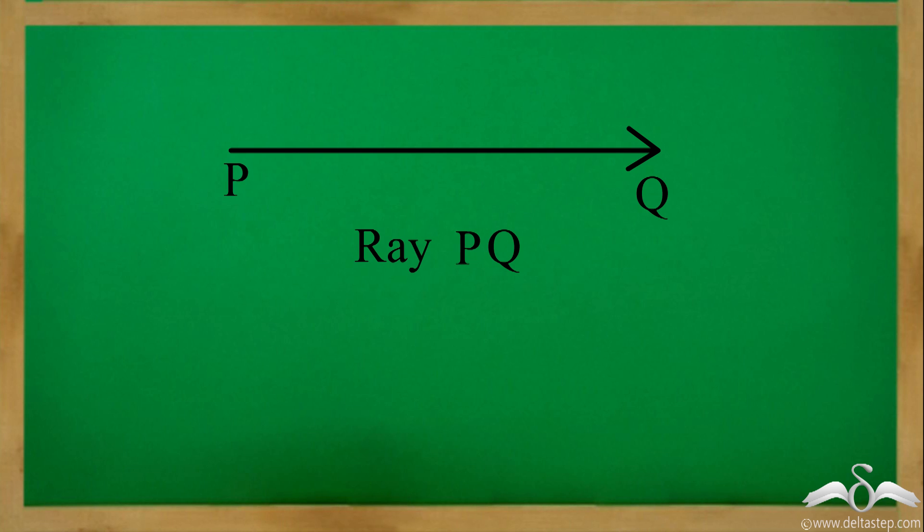So, if PQ is a ray, its starting point that is P is also called the vertex. Q is another point on the ray. Remember that Q is not the starting point of this ray. So, we cannot denote ray PQ as ray QP.